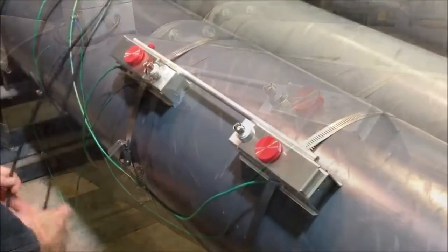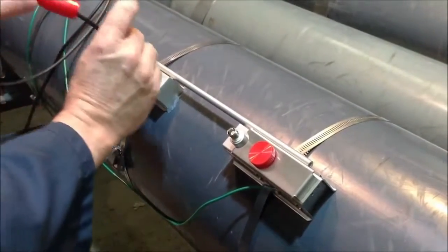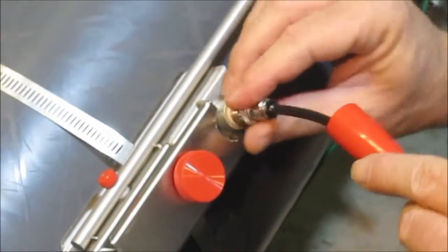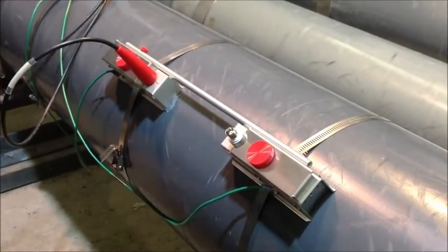Now we connect the transducers to the TTFM 1.0 flow meter electronics. The coaxial cables use B and C connectors and couple to the transducer.